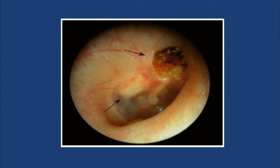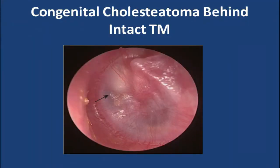Now, diagnosis of cholesteatoma. In adults, diagnosis is quite straightforward: there will be a history of ear discharge which is foul-smelling, and on examination we will find tympanic membrane perforation or tympanic membrane retraction with characteristic keratin debris. But diagnosis in children is not so straightforward, because congenital cholesteatoma can present as a white mass behind an intact tympanic membrane, giving the impression of middle ear effusion, and can cause conductive hearing loss similar to otitis media with effusion.